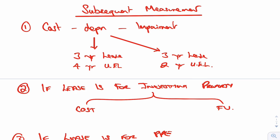Consider this: if it's a three-year lease and a four-year useful economic life, how long would you depreciate over? Three years, because that's how long your lease is. But compare that to the next example where it's a three-year lease but a two-year useful economic life — you would depreciate over two years, because even though the lease is for three years, the asset will have died by two years. So it's always the lower of the lease term and the useful economic life.